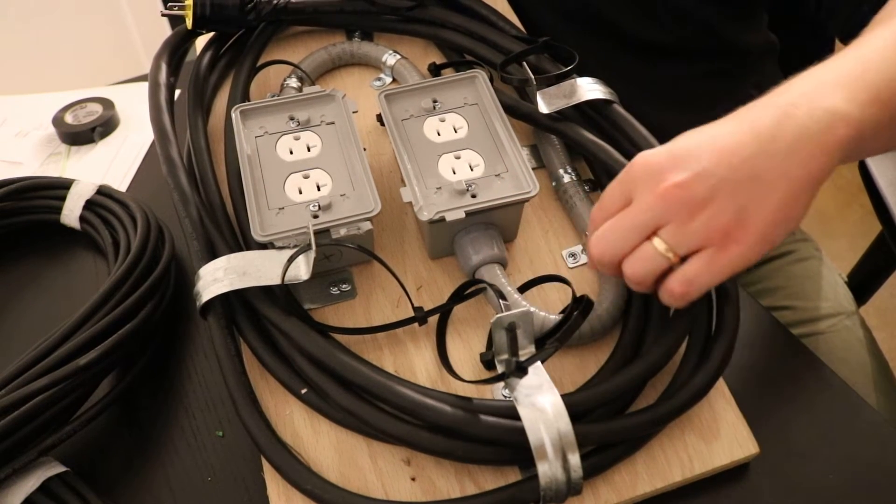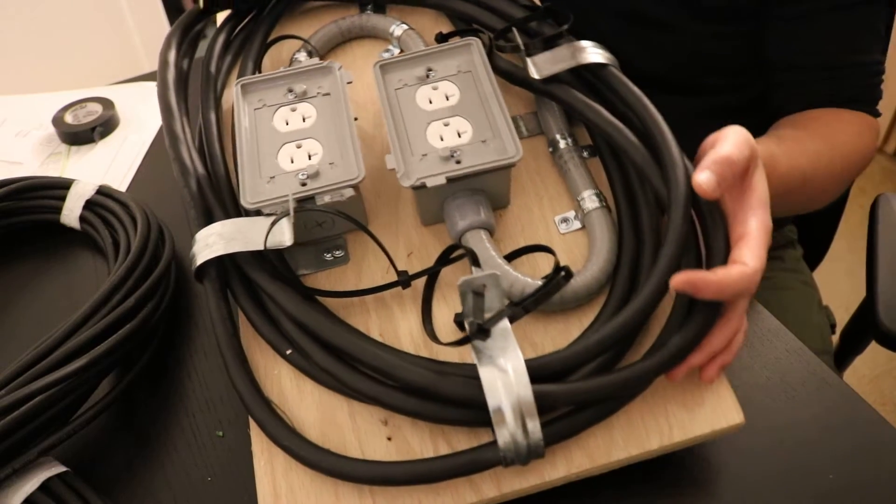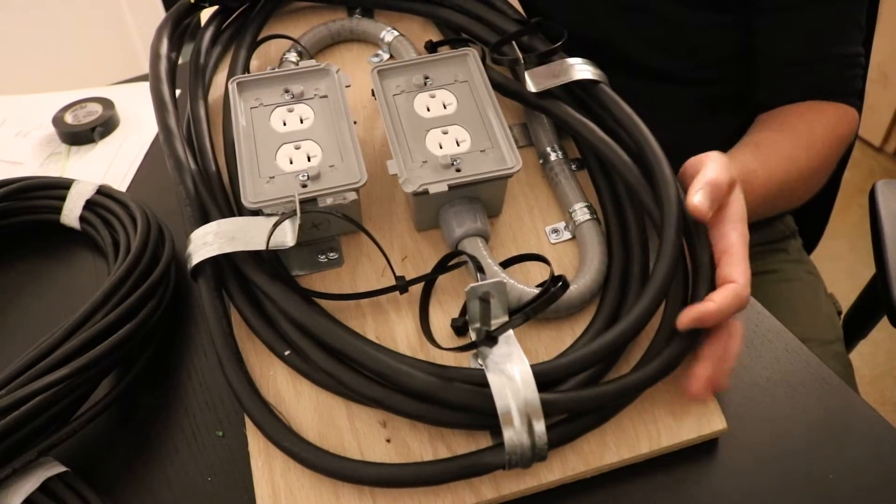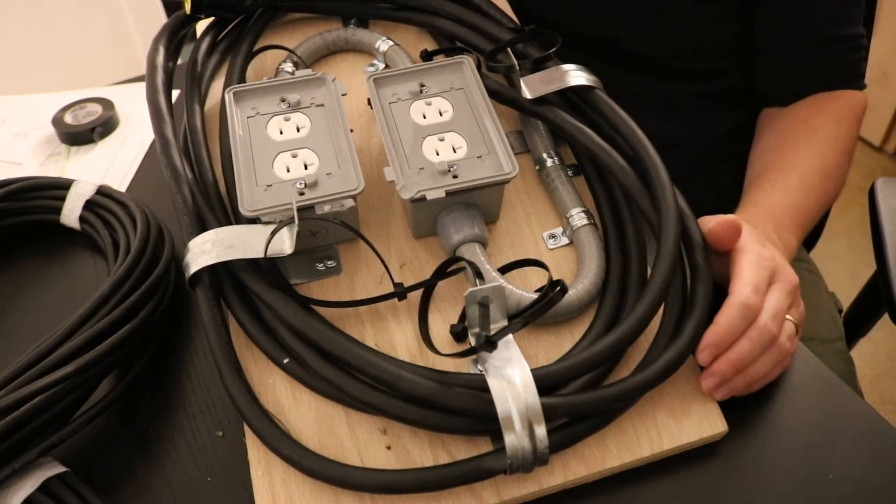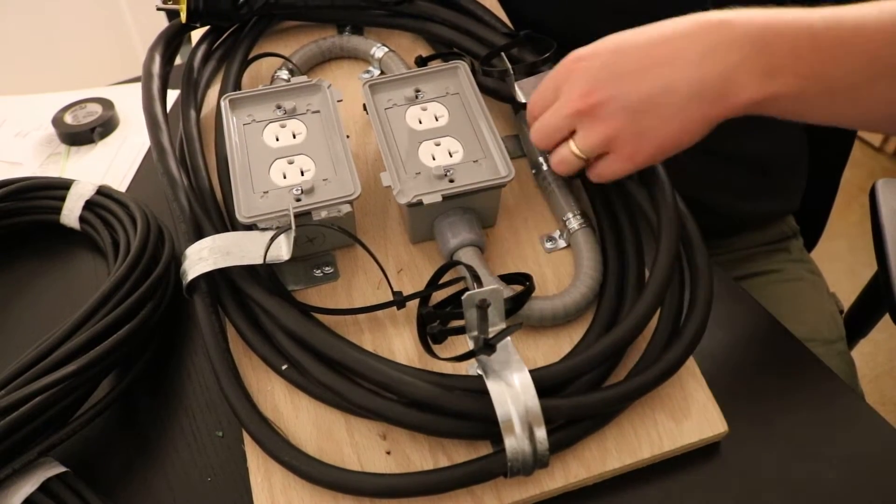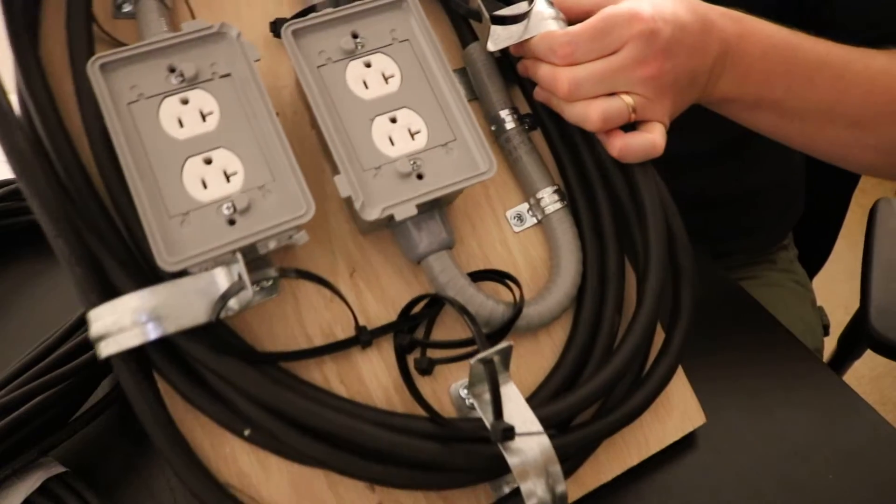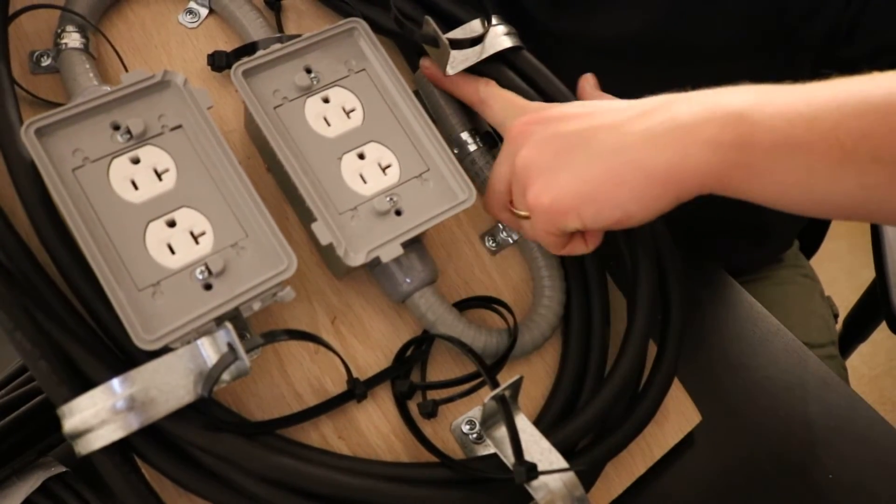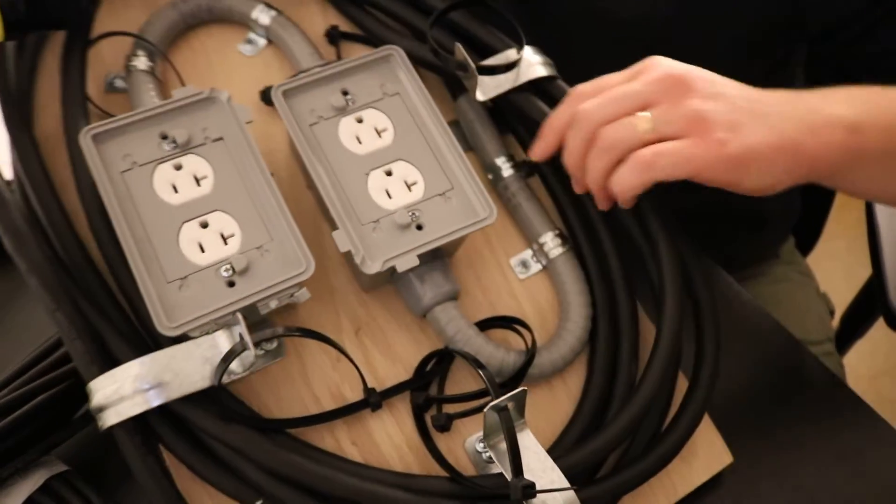And then out of this other one there's a piece of SEOW cord that is sleeved out of the bell box, which if someone can cite a code violation for that I'd be interested to know. Basically, I don't know if you can see, but there's the Carflex and the SEOW cord is just coming right out of it.